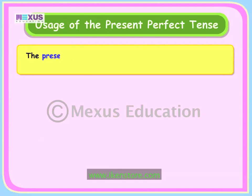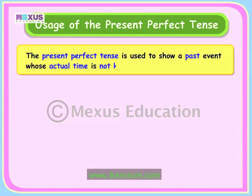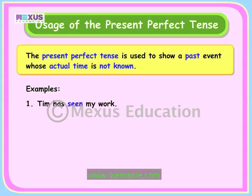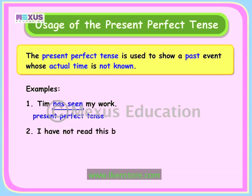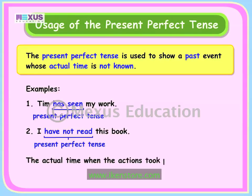The present perfect tense is also used to show a past event whose actual time is not known. For example: 'Tim has seen my work' — the main verb 'seen' is used with the helping verb 'has'. Similarly, 'I have not read this book' — the main verb 'read' is used with the helping verb 'have' and the word 'not'. In both examples, the actual time when the actions took place is not known.